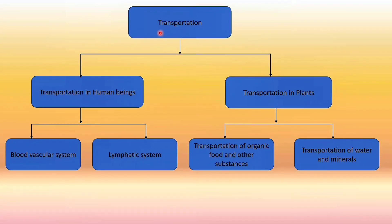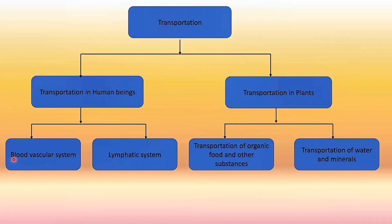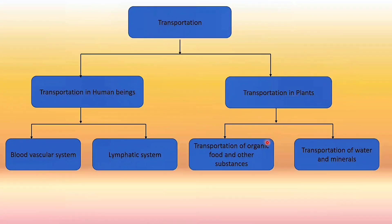Transportation can be classified into two parts: in animals — for example in human beings — and in plants. Transportation in human beings can be further classified into the blood vascular system and the lymphatic system. The blood vascular system consists of the fluid connective tissue called blood, the pumping organ that is the human heart, and blood vessels — arteries, veins, and capillaries. The lymphatic system consists of the fluid connective tissue called lymph, carried through lymphatic vessels. In plants, transportation is mainly by phloem for organic food and by xylem via tracheids and vessels for water and minerals.